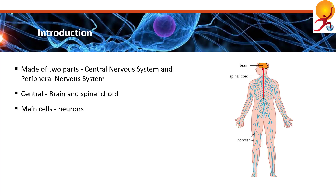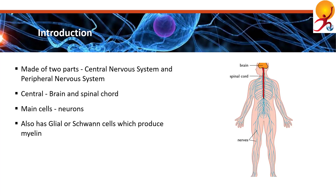The main cells of the nervous system are neurons. In addition to neurons, the nervous system is also made of glial cells. Neurons are cells that function in receiving and transmitting neural impulses. Glial cells support, feed and electrically insulate the neurons.